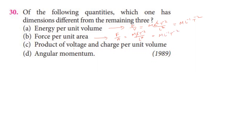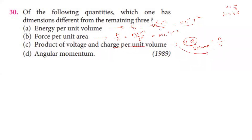The product of voltage and charge per unit volume: since work done equals V into Q, voltage times charge equals energy, so this also gives ML⁻¹T⁻². The product of force and charge per unit volume similarly gives ML⁻¹T⁻². So options A, B, and C all have the same dimension.